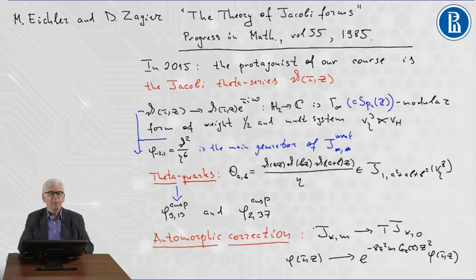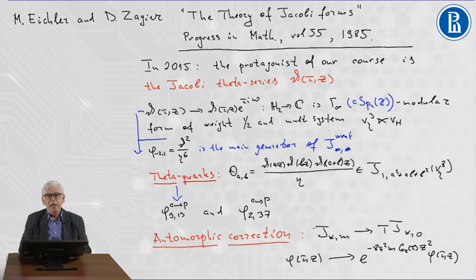Then you can find the application of Jacobi Modular Forms in topology. Elliptic genus and generalized elliptic genus of Calabi-Yau varieties are Jacobi, weak Jacobi Forms of weight zero.